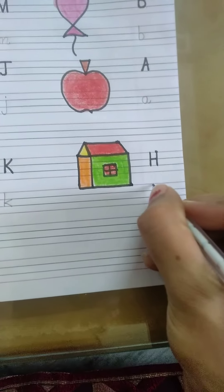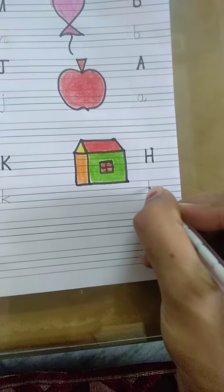H for hat. Small edge, standing, then curve with tail.